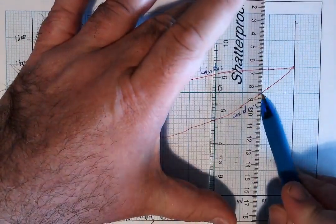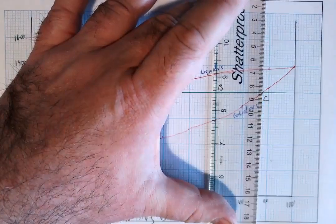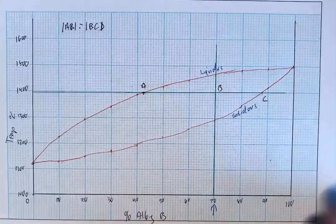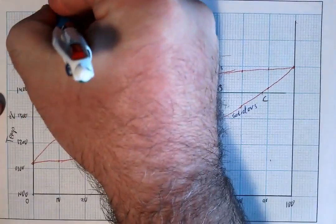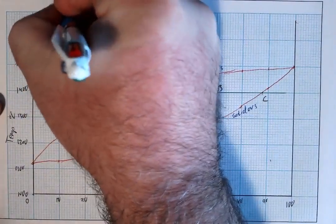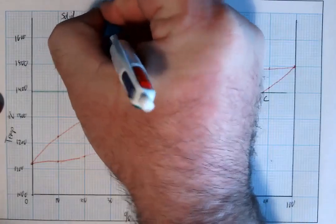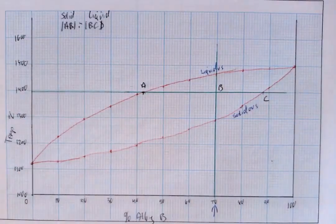So AB is now at 100%, BC is at zero, which means there is zero liquid, 100% solid. So because of this, AB is measuring the proportion of solid and BC is measuring the proportion of liquid.